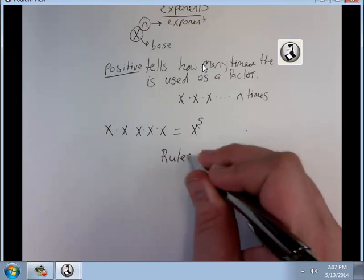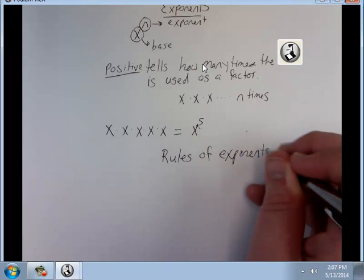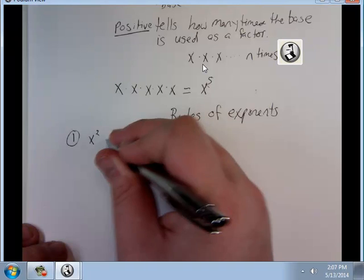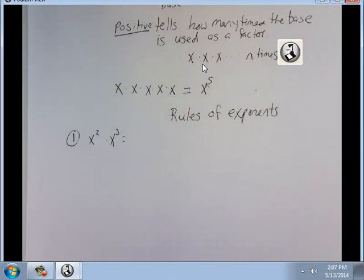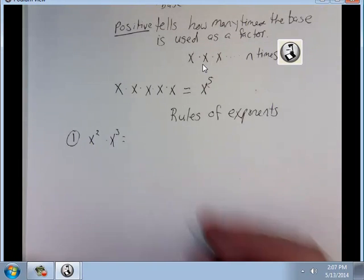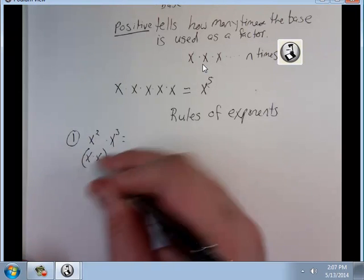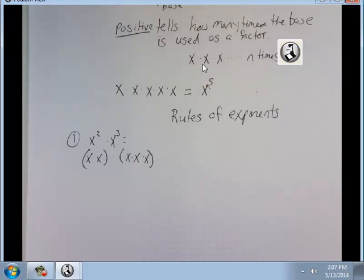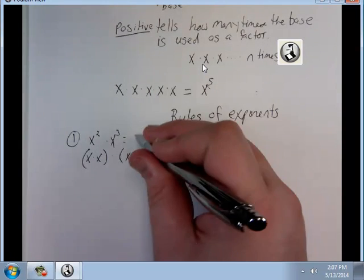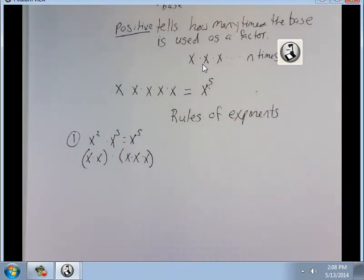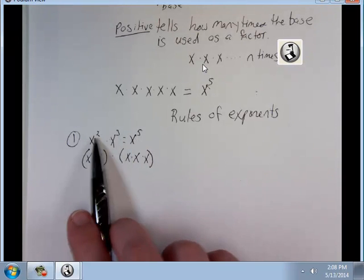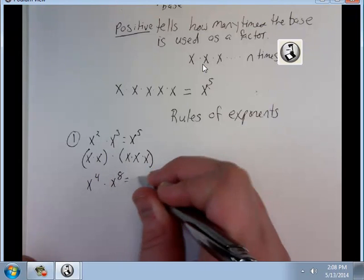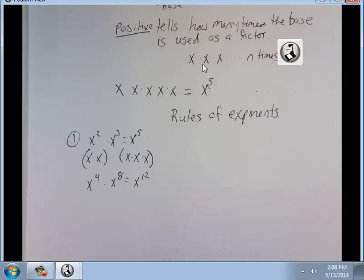Now there are some rules of exponents. First rule: what's x squared times x to the third? x squared is x times x, and we're going to multiply that by x times x times x. When we're multiplying, you're going to add your exponents — they become just the sum of your exponents. So x to the fourth times x to the eighth would be x to the twelfth. That's multiplying with exponents.